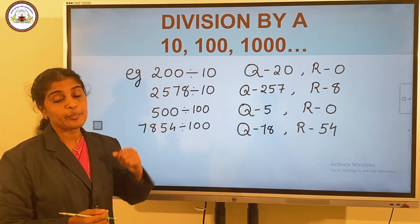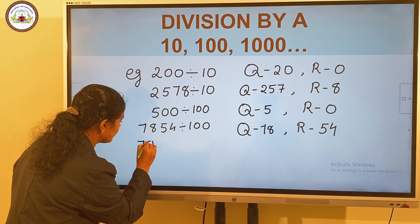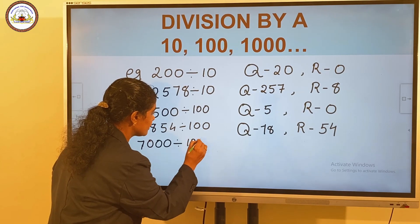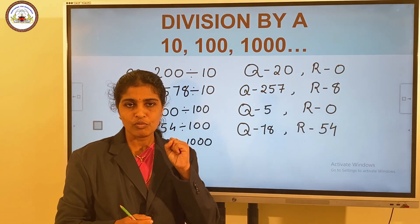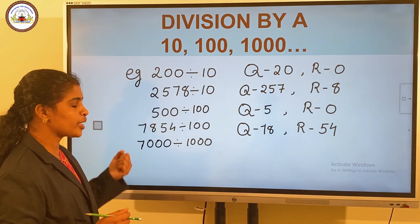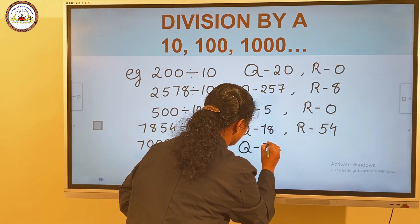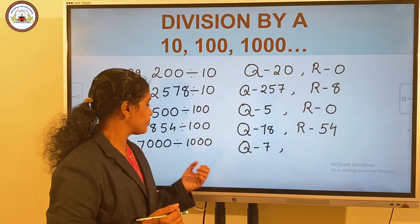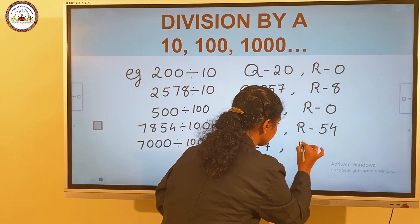When dividing a number by 1,000, consider: 7,000 divided by 1,000. Here, we remove the ones, tens, and hundreds places. After removing those three places, the quotient is 7. And the remainder is the number formed by those three digits: 0, 0, 0 — so the remainder is 0.